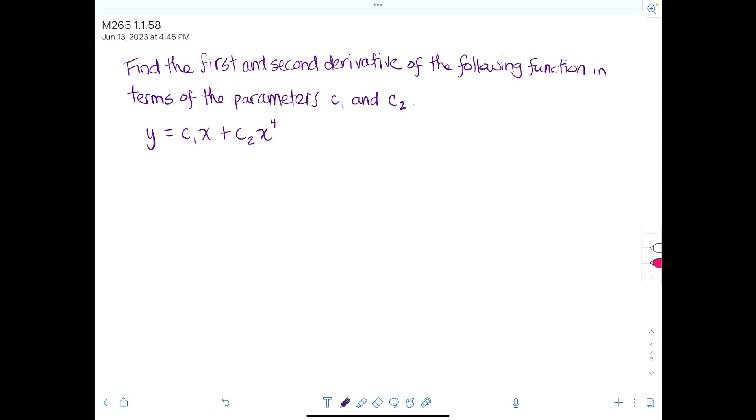Hey there, it's Shannon Mathczyk-Meyers and today we're going to do an example from the very first section of the Zill differential equations text. So here we go. We want to find the first and second derivative of the following function in terms of the parameters c1 and c2. y is equal to c1 times x plus c2 times x to the fourth.